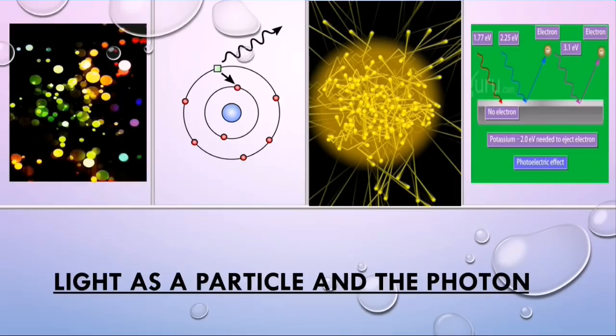Corpuscular or particle theory of light was put forward arguably by Descartes in 1637. This corpuscular theory of light was largely developed by Newton in 1672 and was predominant for more than 100 years. It took precedence over Huygens' wave theory of light.